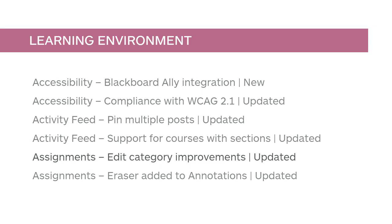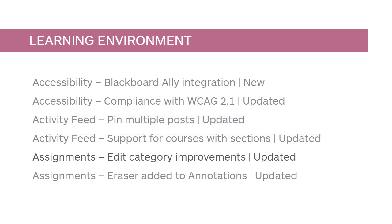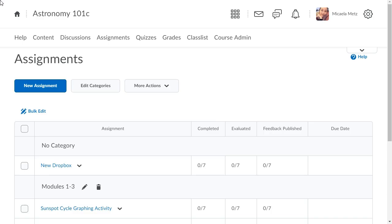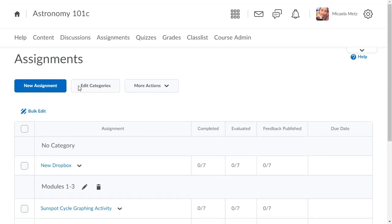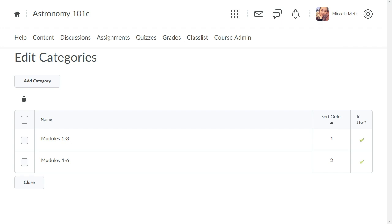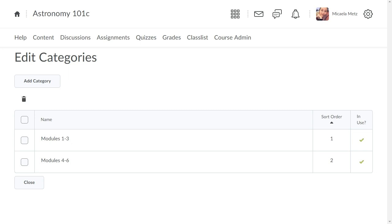An Edit Categories option is now available in Assignments to allow users to edit all categories from one page. This feature implements PI items D1858 and D1913. From Assignments, click Edit Categories. Here, instructors can add, modify, delete, and sort categories, as well as manage unused categories.